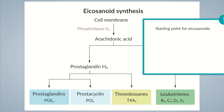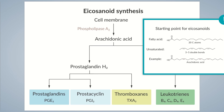Stating that eicosanoids are synthesized from arachidonic acid is merely an example. It would be more precise to say that eicosanoids are formed from fatty acids that are 20 carbon atoms in length — this explains the origin of their name, as 'eicos' is a Greek word meaning 20. In addition, the fatty acid must be unsaturated, meaning not all carbon atoms carry the maximum number of hydrogen atoms but form double bonds. Three to five such double bonds are required. The most common representative is arachidonic acid, which has four double bonds.